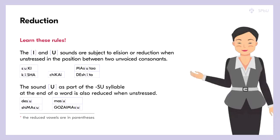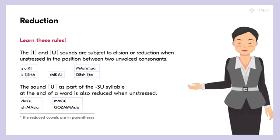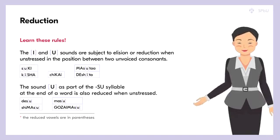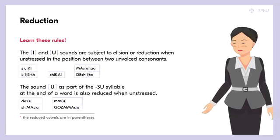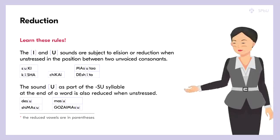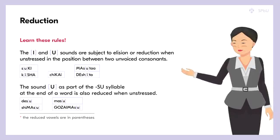In this module section dedicated to colloquial language, you will encounter words that you should read according to this rule. For example, the present tense form of the copular 'to be' in polite colloquial speech is pronounced differently